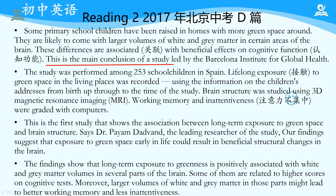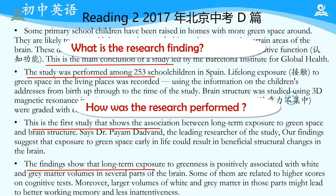结合后边的理解，这部分是在讲How was the research performed? 包括后边两段。This is the first study that shows the association between long-term exposure to green space and brain structure. The findings show that long-term exposure to greenness is positively associated with white and grey matter volumes in several parts of the brain. 这些段落主题句能让我们尽快明晰这个实验研究的findings以及对findings的analysis。